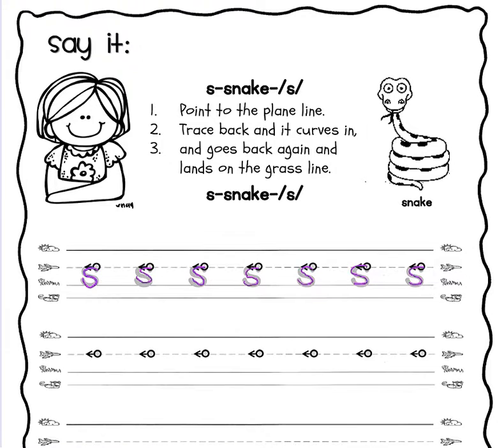On the second line, start with the dot. Notice the arrows pointing backwards. Again, we should end on the grass line.